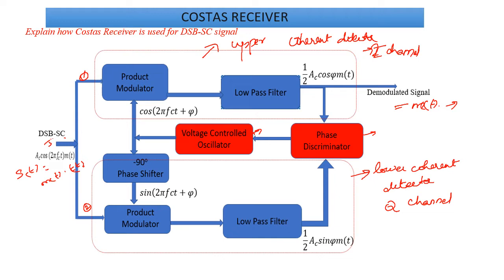Your I channel consists of a combination of your product modulator and a low pass filter. Similarly, your Q channel also consists of a product modulator and a low pass filter. Your DSB-SC signal is given as input to both product modulators. One input to each product modulator is the DSB-SC signal; the other input is the local oscillator output, which is cos(2πf_c·t + φ). The same local oscillator output is given to a 90-degree phase shifter — a Hilbert transformer — which gives sin(2πf_c·t + φ) as the second input to the lower product modulator.